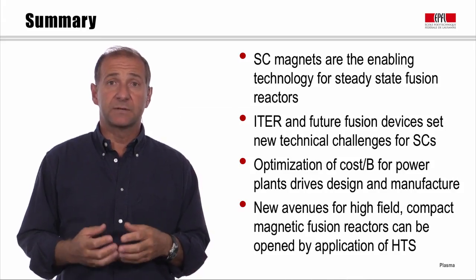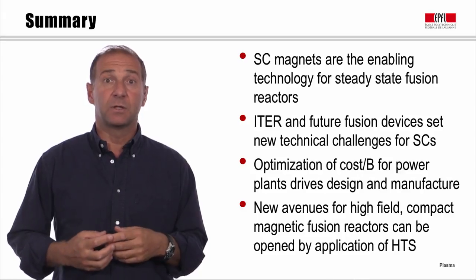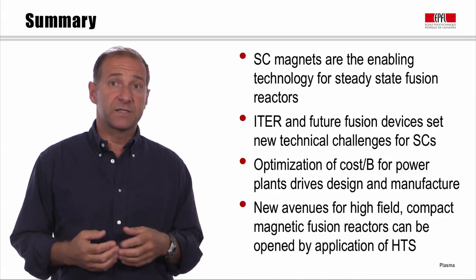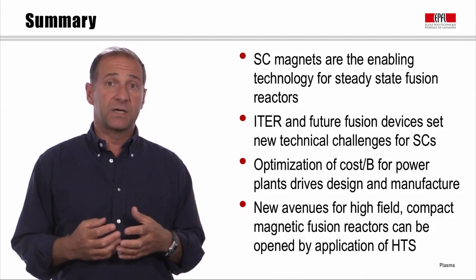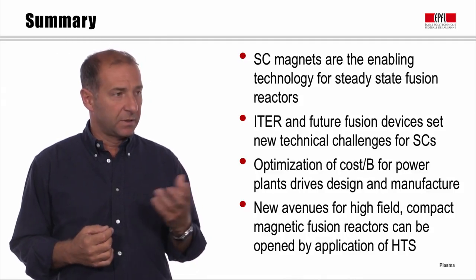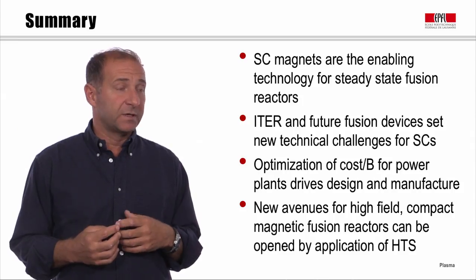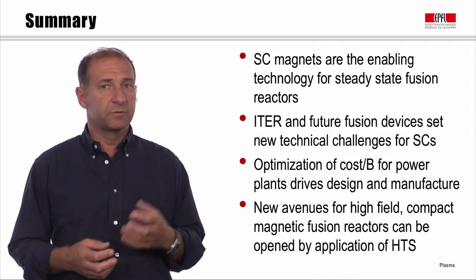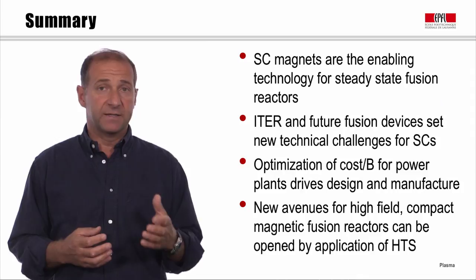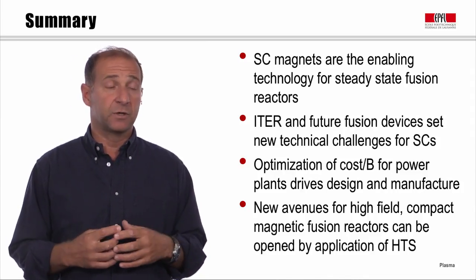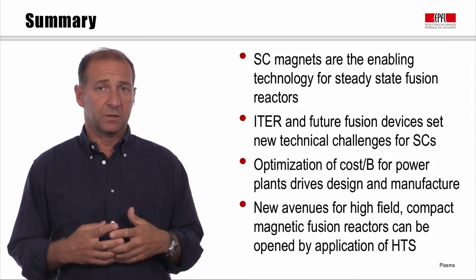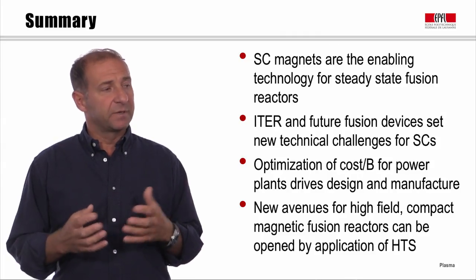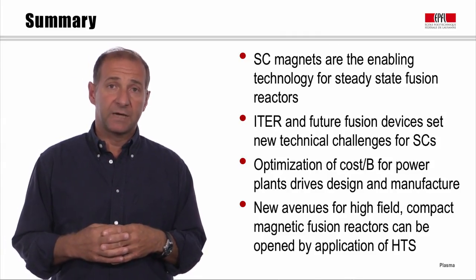In summary, superconducting magnets are a main enabling technology for fusion reactor development. ITER and all fusion devices we have in mind set new and very demanding technical challenges for superconductors. The main driver for design and manufacture is the optimization of the cost-to-performance ratio — cost divided by the magnetic field intensity produced over a large volume. New avenues for high-field compact magnetic fusion reactors can be opened by the application of high-temperature superconductivity.